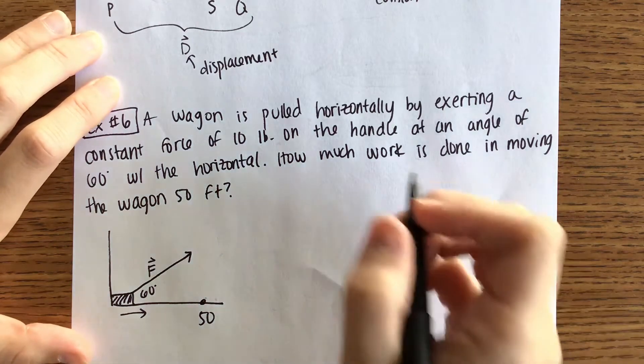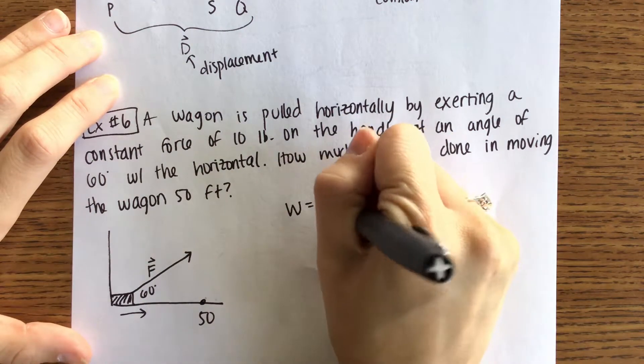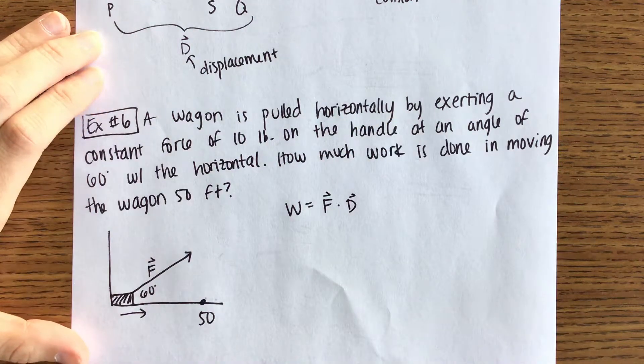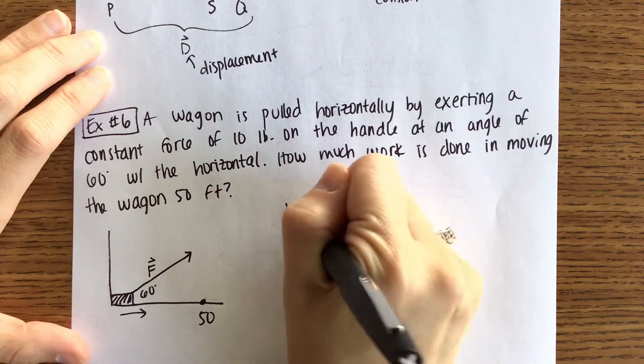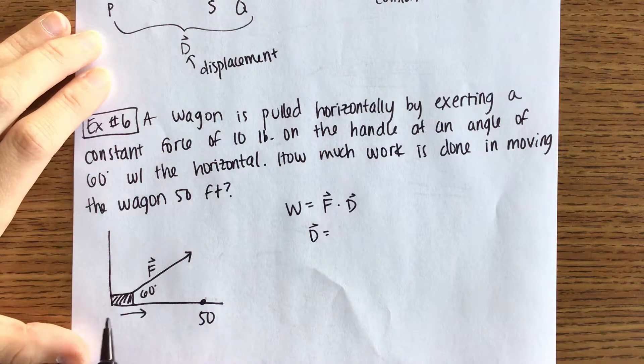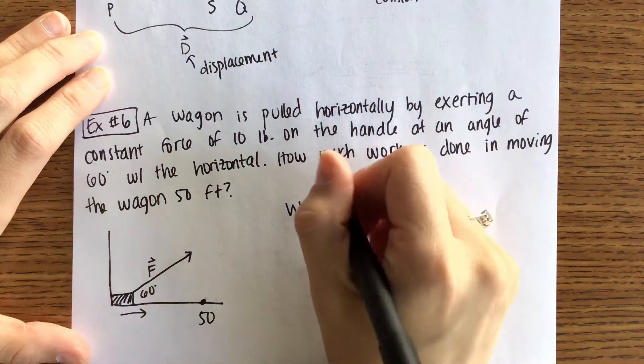So what we wrote above is work is going to be the force vector dotted with the displacement vector. D we already know. D is just moving the wagon that 50 feet horizontally. So D will be the vector 50 comma 0.